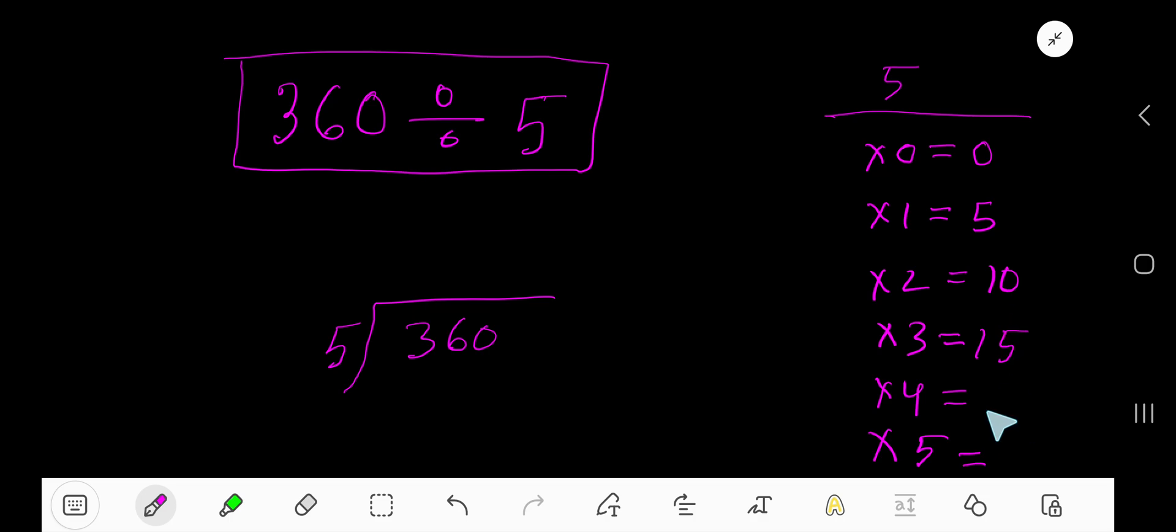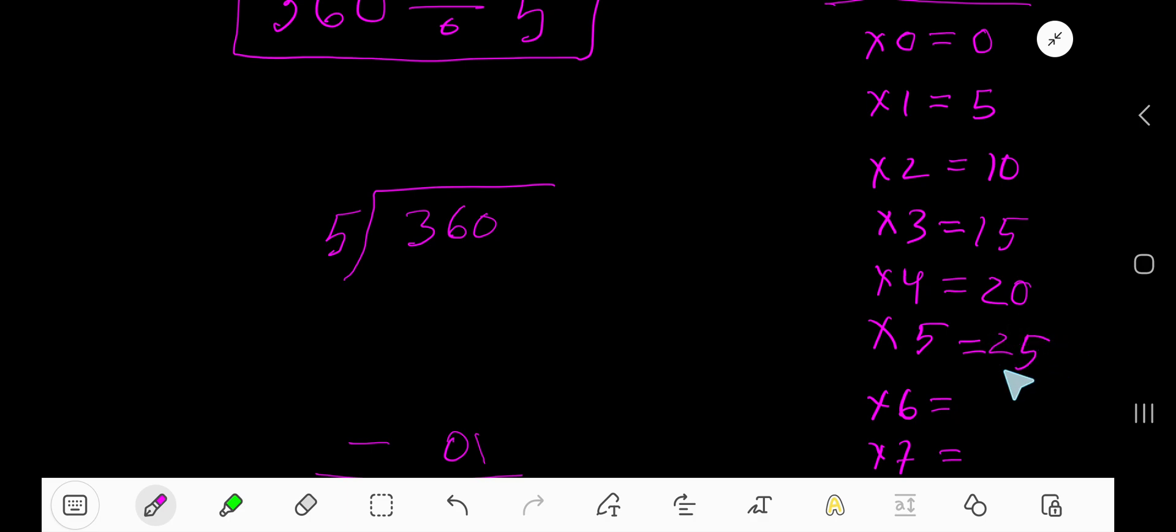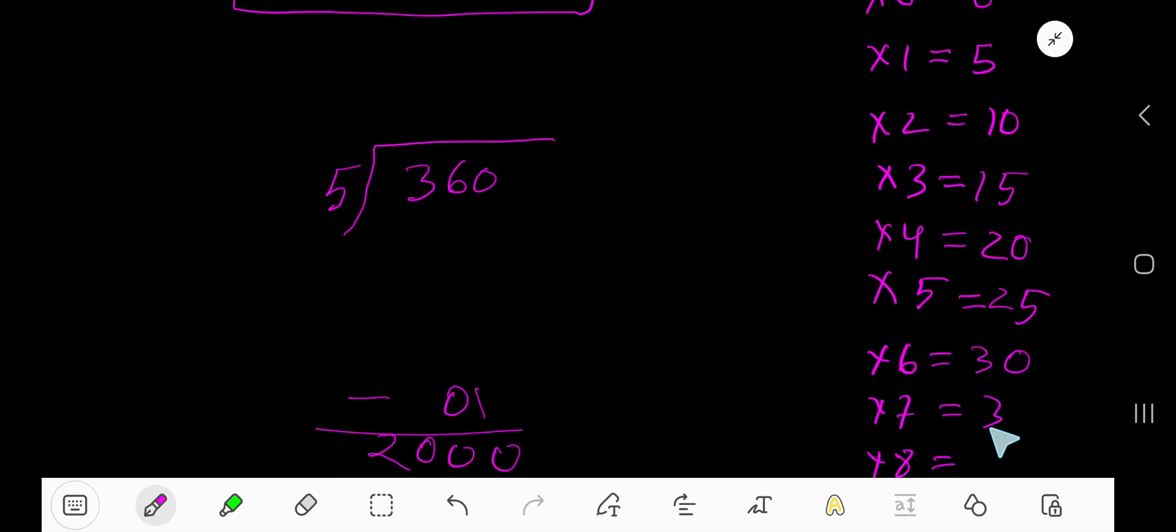5 times 3 is 15. This process will continue. Then 20, then 25, then 30, then 5 times 7, 35.